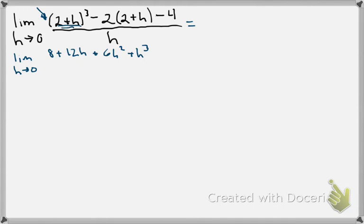Next term is just some distribution, so minus 4, minus 2h, and then we have the minus 4 at the end. This whole thing is all still over h.